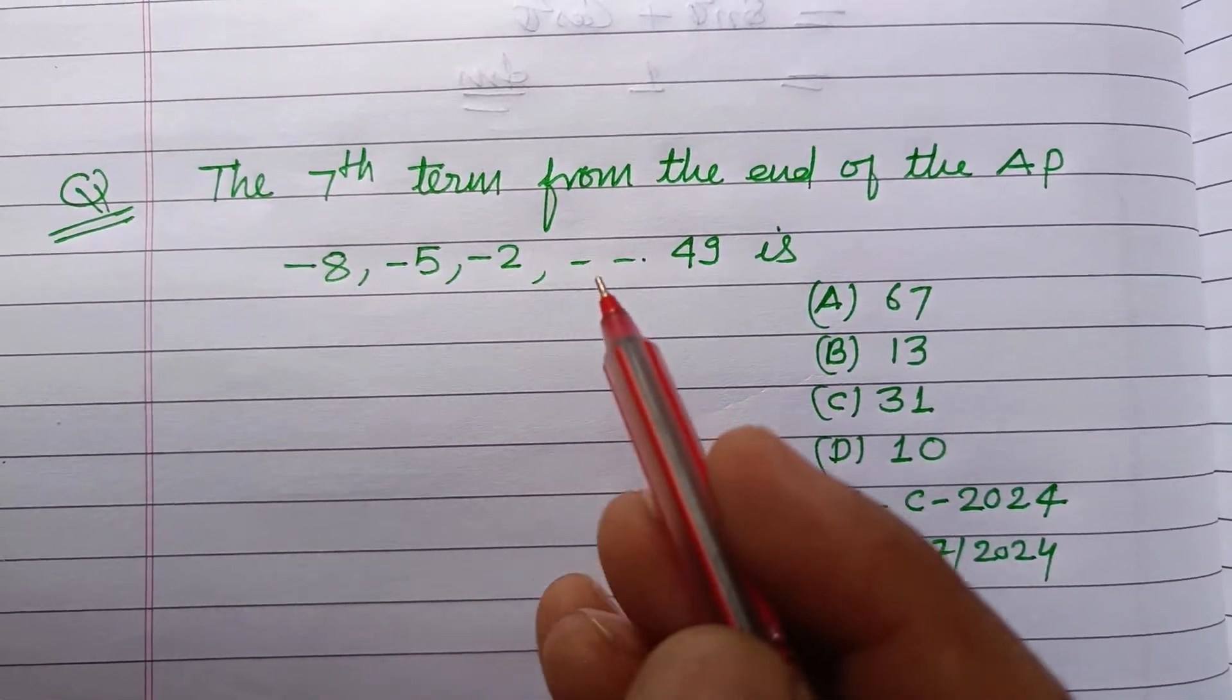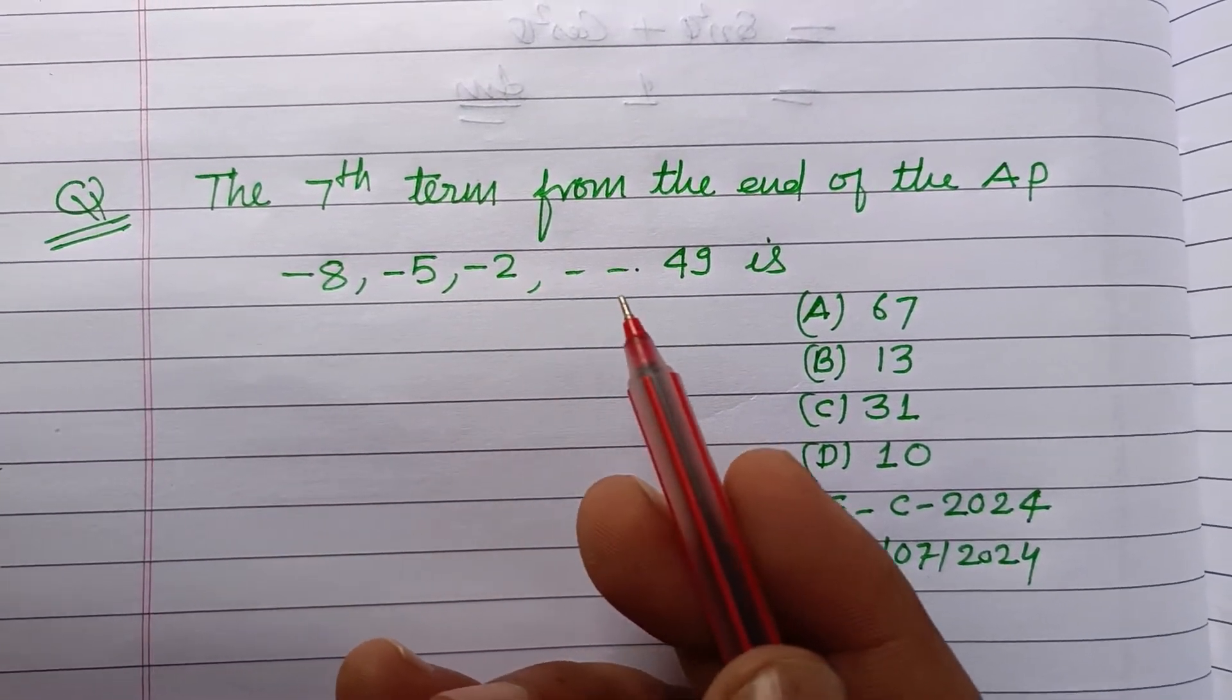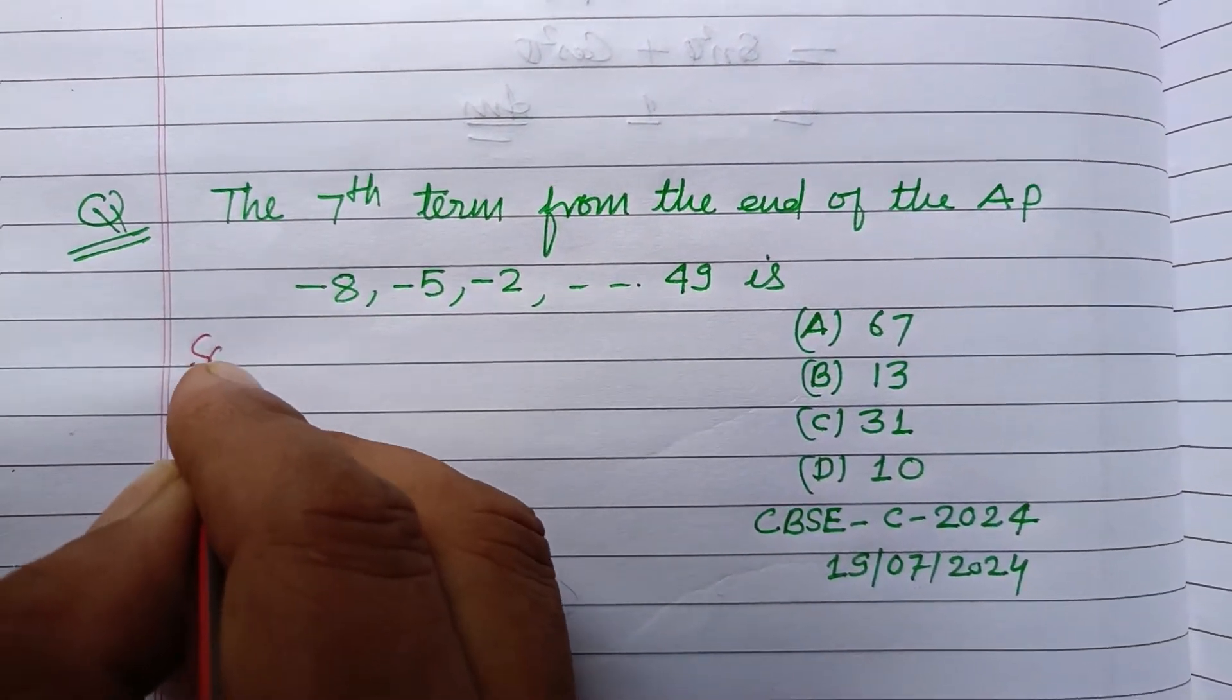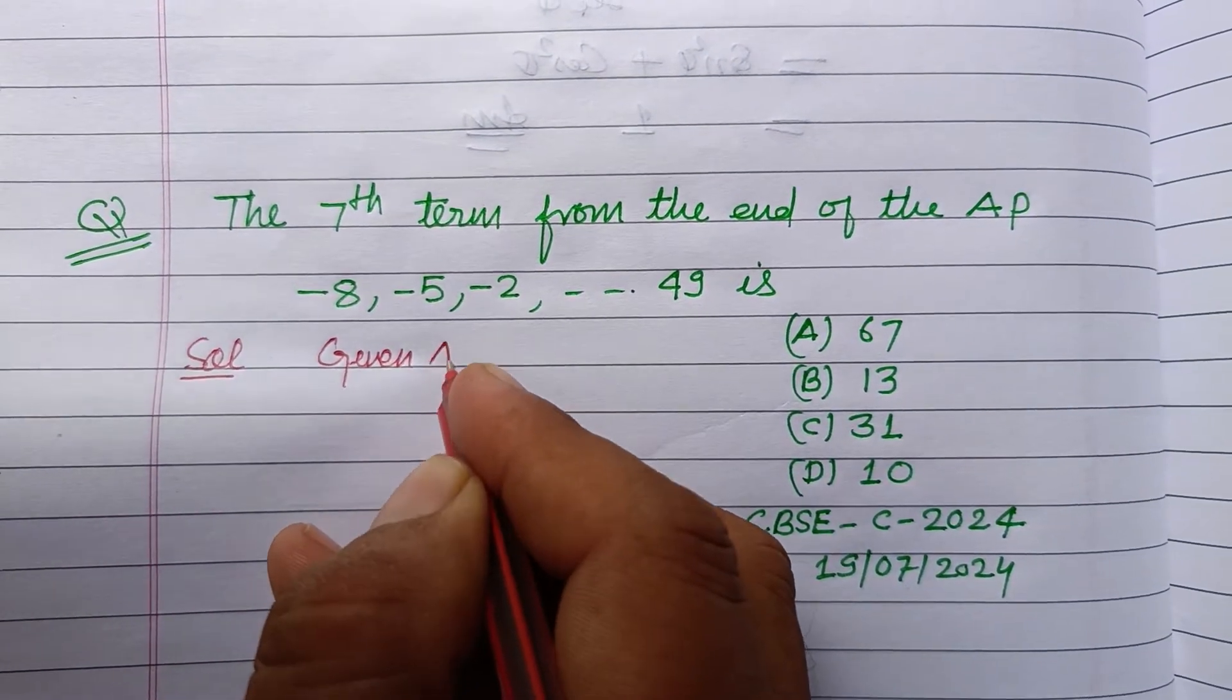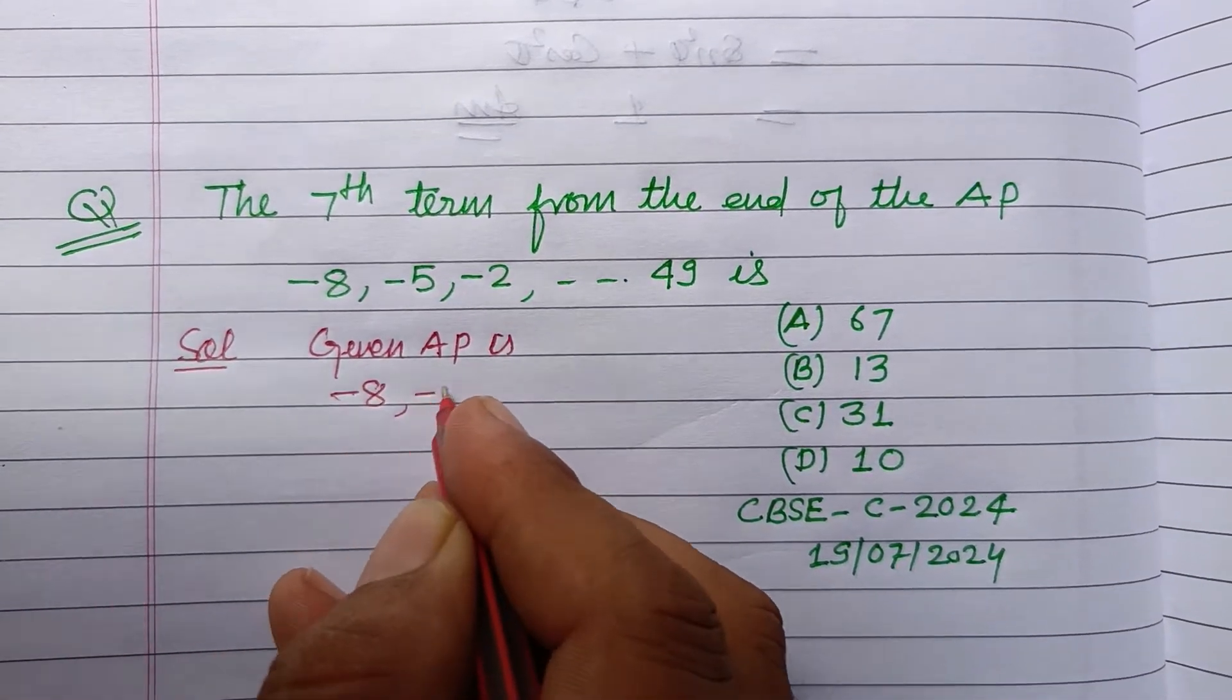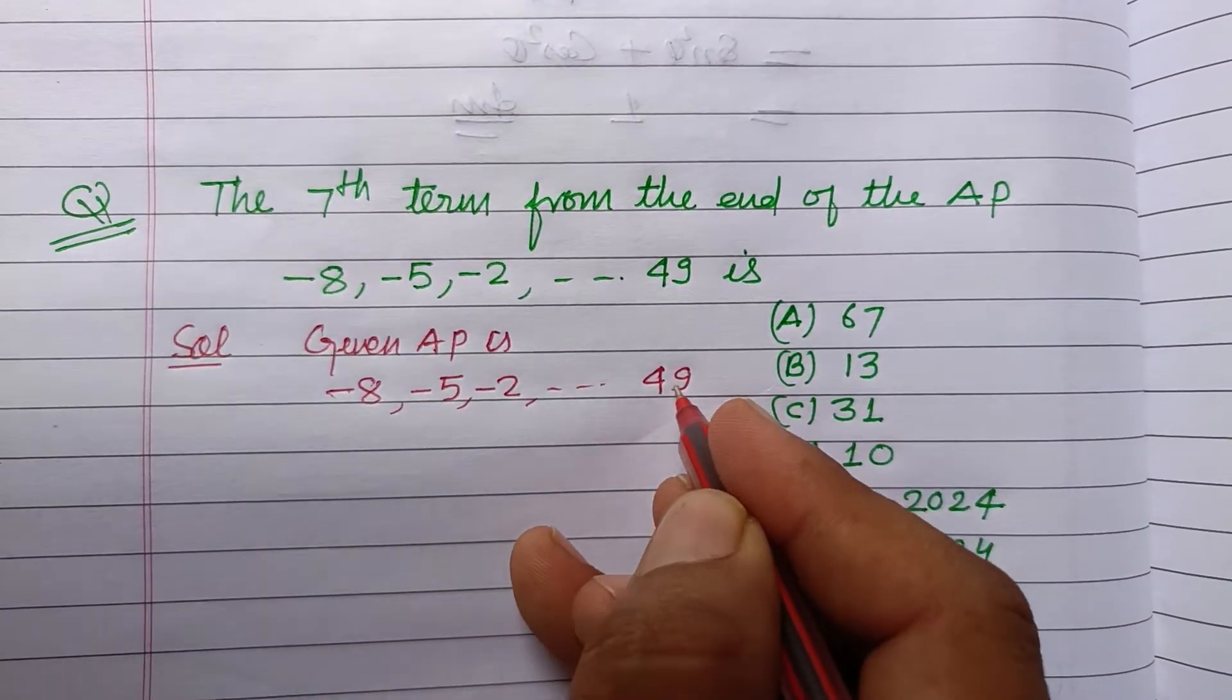The 7th term from the end of the AP minus 8, minus 5, minus 2 and so on up to 49 is. So students, here the given AP is minus 8, minus 5, minus 2 and so on, 49.